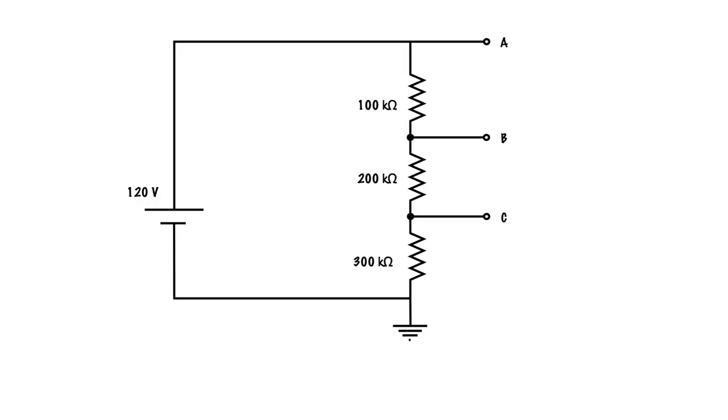Here we have a typical voltage divider circuit. We have three different resistors, the 100k ohm, 200k ohm, 300k ohm. I have a reference point here, a ground reference point. I have some tap-off points, A, B, and C.